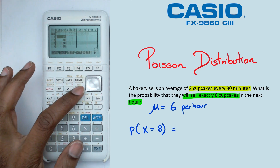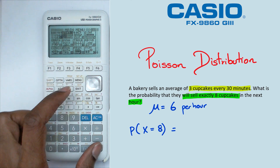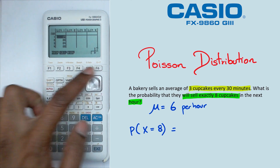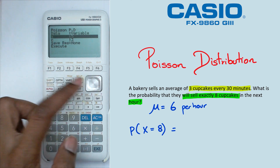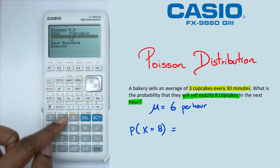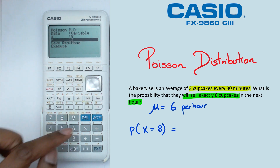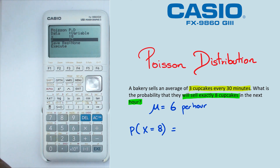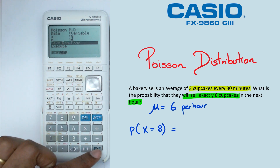To do this, once again we go into the main menu, go into stat mode, go into distribution, click on F6, go into Poisson PPD. We're going to put x equal to eight, and our mean is equal to six. Remember that it's three cupcakes every 30 minutes, which means per hour we get six cupcakes. Once we do that, press EXE.